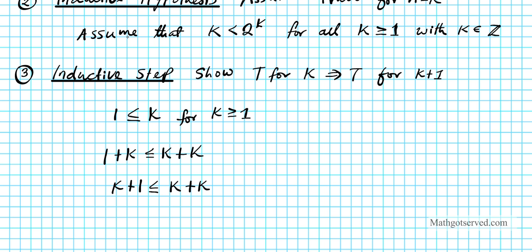From the inductive hypothesis we know that k is less than 2 to the k. So this k is less than 2 to the k, and another copy of k is also less than 2 to the k. Therefore we can conclude that k plus k is strictly less than 2 to the k plus 2 to the k, because both summands are bounded by 2 to the k.